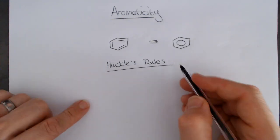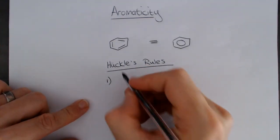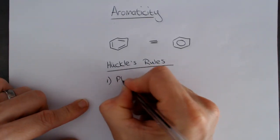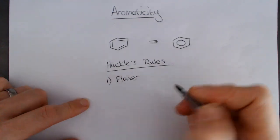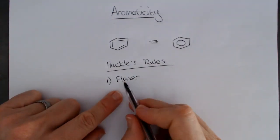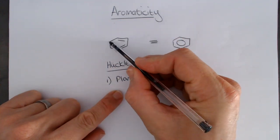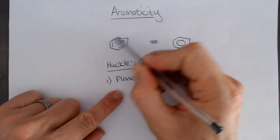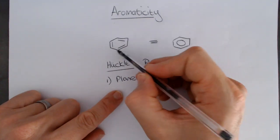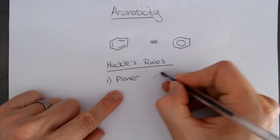And the rules for aromaticity, there are three of them. The first thing is that aromatic molecules must be planar. They must be planar. So a benzene ring, for instance, is sp2, sp2, sp2, sp2, sp2, sp2. These are all trigonal planar atoms. And so this whole molecule is completely flat. So benzene satisfies that. It needs to be completely planar.